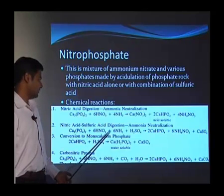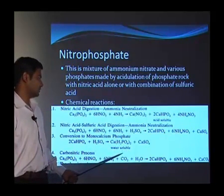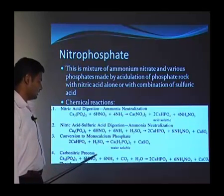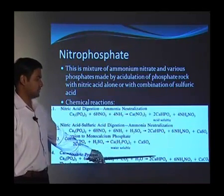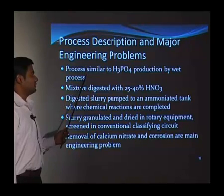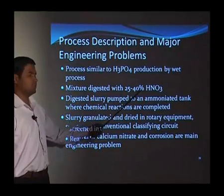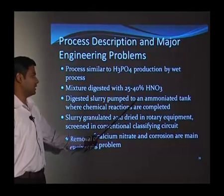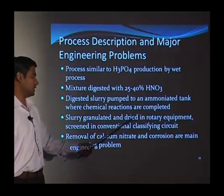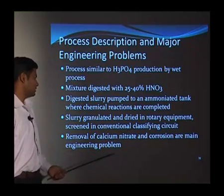This is similar to the phosphoric acid production by the wet process. Ca(H2PO4)2 with sulfuric acid gives Ca(H2PO4)2 which is water soluble and calcium sulfate. The last reaction, the carbonitric process, gives Ca(H2PO4)2 and ammonium nitrate. The mixture is digested with 25 to 40 percent nitric acid. The digested slurry is pumped to an ammonium nitrate tank where chemical reactions are completed. The slurry is granulated and dried in rotary equipment, screened in a conventional classifying circuit, and removal of calcium nitrate and corrosion are the main engineering problems.